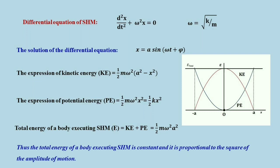The total energy of a body executing simple harmonic motion is the sum of kinetic energy and potential energy. Adding the two expressions, we obtain ½mω²a², where m is the mass, ω is the circular frequency, and a is the amplitude — this is a constant term. So for a body executing simple harmonic motion, the total energy is constant or conserved, and the energy is proportional to the square of the amplitude a². This is the energy expression for a classical harmonic oscillator.